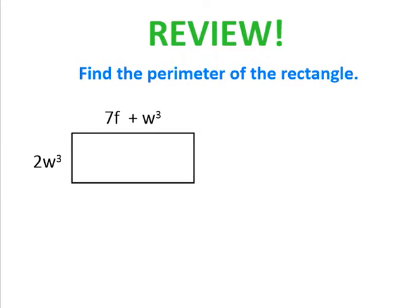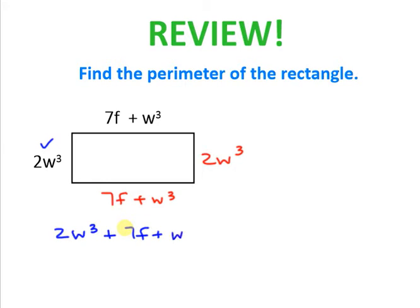Let's do a quick review of combining like terms with shapes. This is a rectangle. If this side is 2w to the third, the opposite side is also 2w to the third. If this side is 7f plus w to the third, the opposite side is also 7f plus w to the third. We're going to write out the expression so we can combine like terms: 2w to the third, plus 7f plus w to the third, plus 2w to the third, plus 7f plus w to the third.